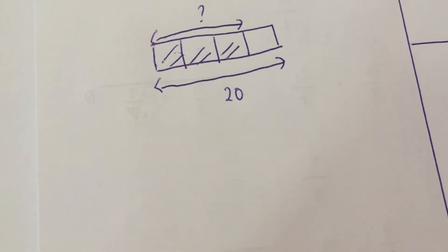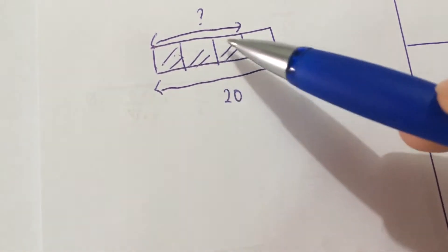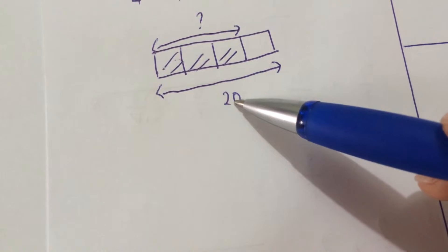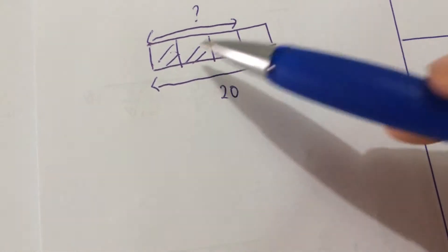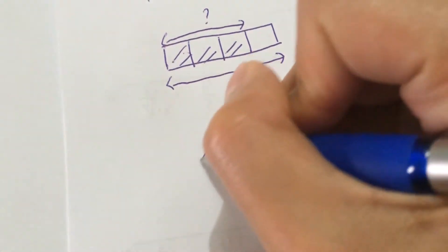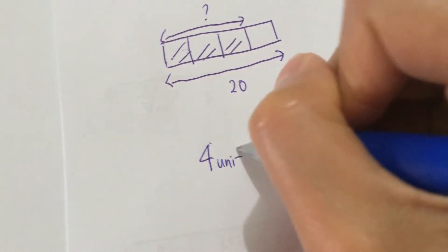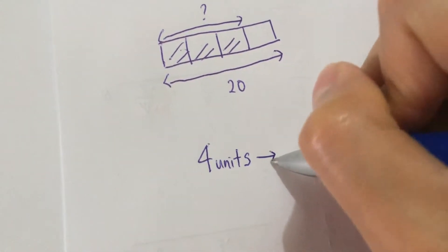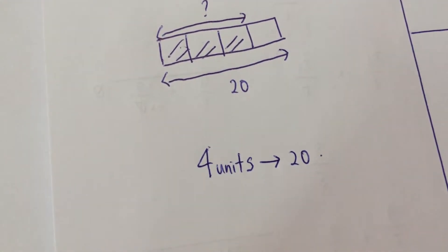So, looking at my model now, it tells me that 1, 2, 3, 4—4 units is 20.